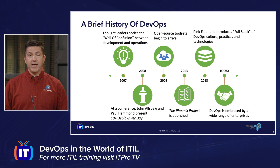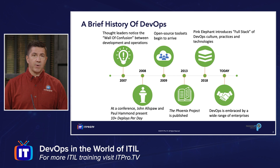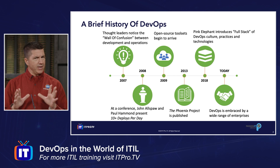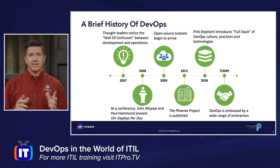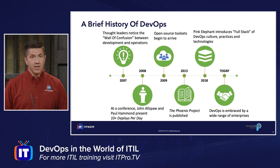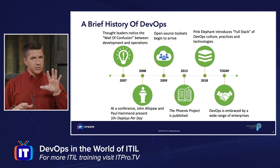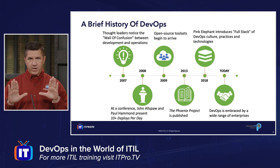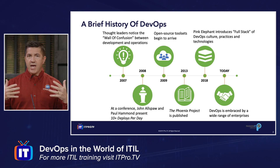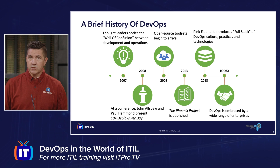In 2008, at the O'Reilly Velocity Conference, John Alspaugh and Paul Hammond from Flickr did a really cool presentation — a very infamous talk called '10 Plus Deploys Per Day: Dev and Ops Coordination at Flickr.' They made the case that the only way to build, test, and deploy working software was to integrate your development and operations teams and increase transparency between the two.